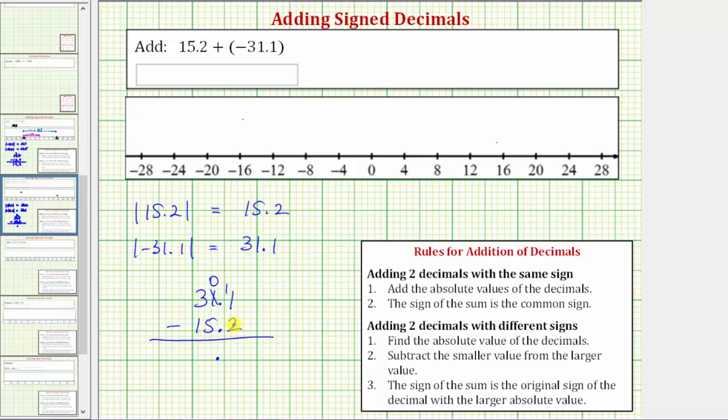Notice here we need to perform an exchange before subtracting. So the one becomes a zero, and now we have 11 minus 2, which is 9. Then we're left with 30 minus 15, which equals 15. So this difference is positive 15.9, but we still need to determine the sign of the original sum.